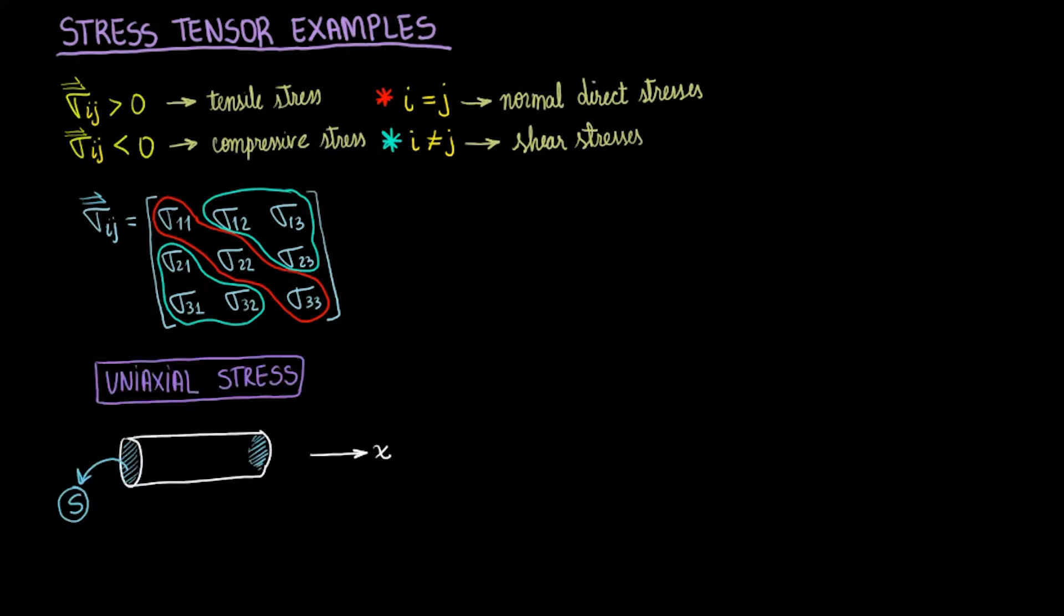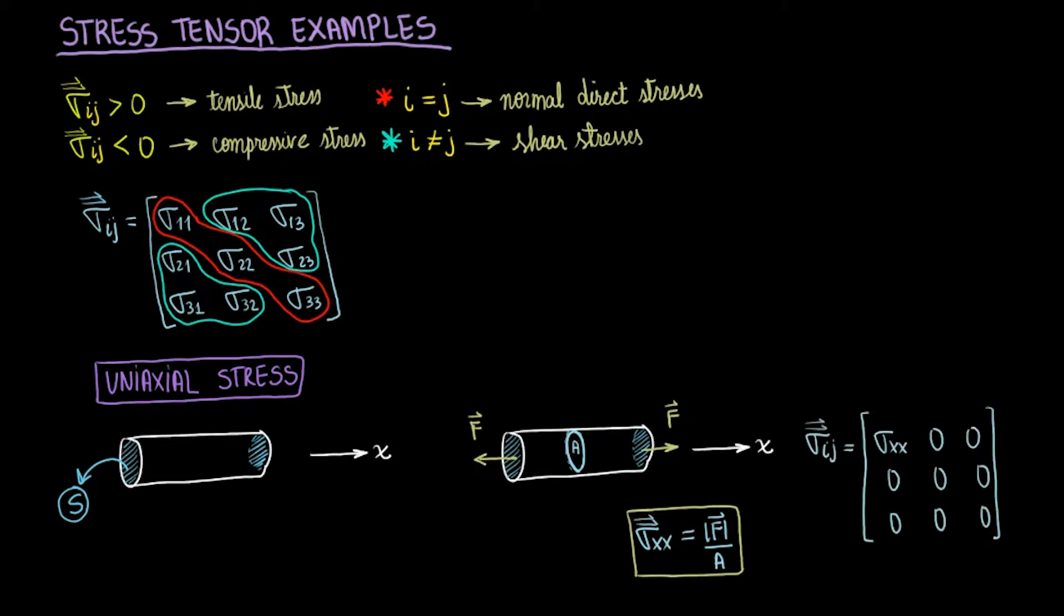Okay, now this is the most basic example of stress. The uniaxial stress will consider stress in only one direction and on only one face. As a result, the stress tensor will only have one component and everything else will be zero. You can easily calculate this one component if you know the force applied and the area over which the force is applied.